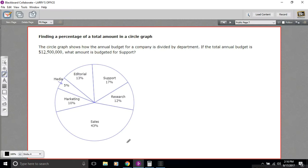In this problem, we have a circle graph. In this case, it's the budget of a business, and it's divided into these pie slices with percentages in them to tell how the budget is spent in the business.